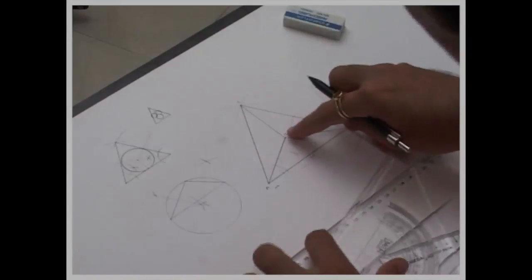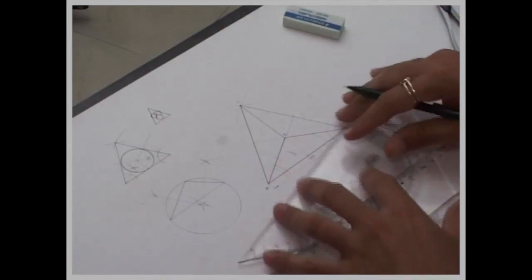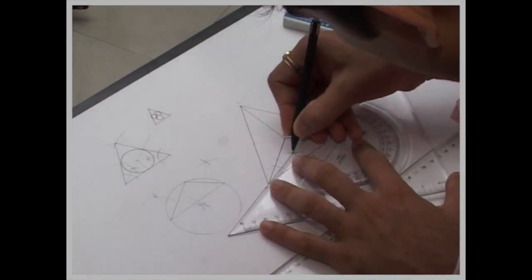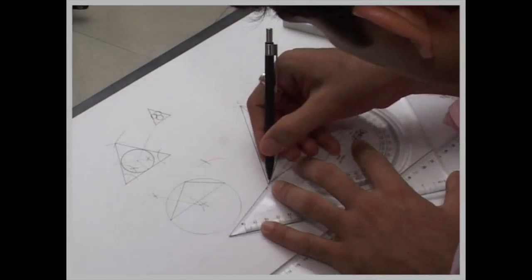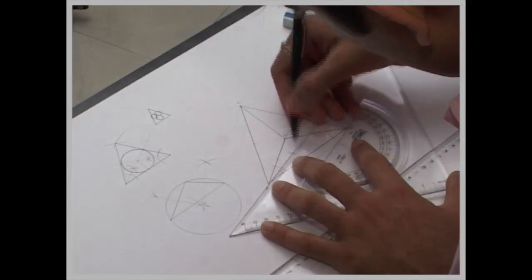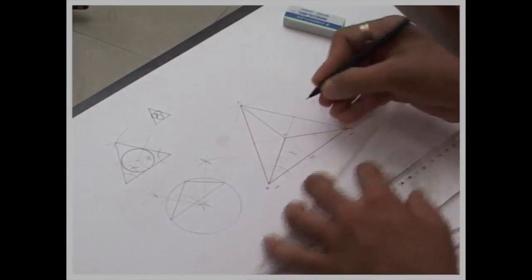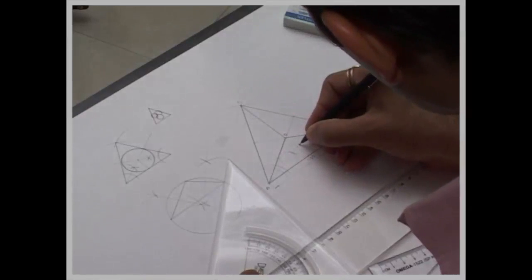Remember that, we have to bisect angle OAB. Wherever it will be cut, that is point one.